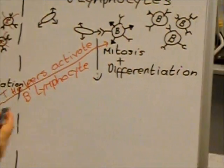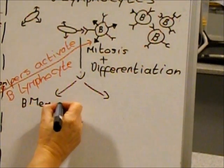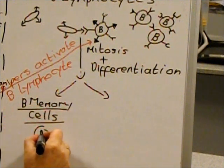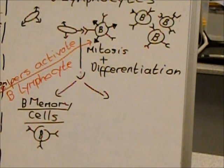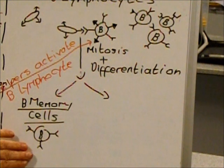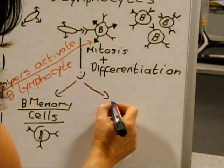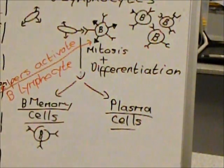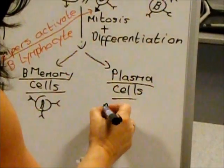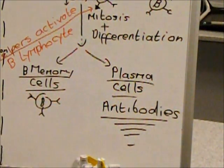When a B lymphocyte undergoes differentiation, it produces two types of specialised B cells. First, B memory cells, which remain in your blood plasma after the infection; if they encounter the same antigen again, they rapidly undergo mitosis to produce a whole clone of B cells. Second, plasma cells — it is the plasma cells that produce antibodies, which are vital to the immune response.